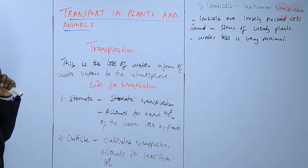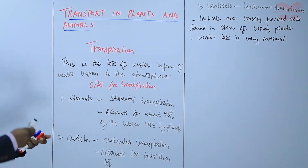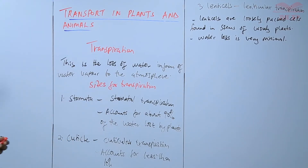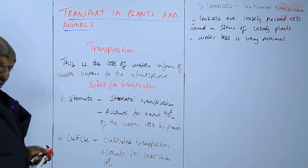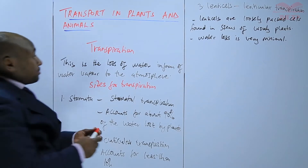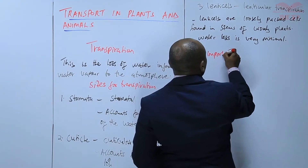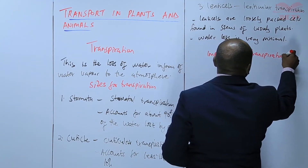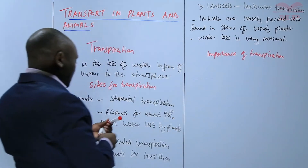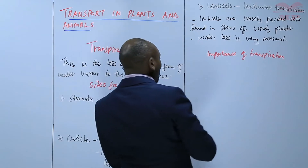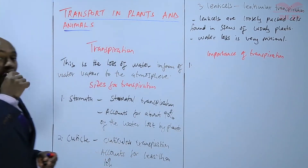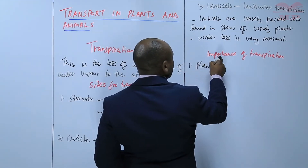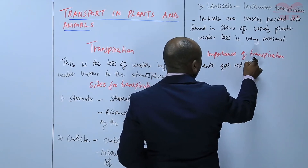Having looked at the three sites for transpiration, it is important to also look at how transpiration is important. The importance of transpiration: number one, through transpiration plants get rid of excess water. So if a plant is growing in a waterlogged area, it is able to get rid of the excess water.